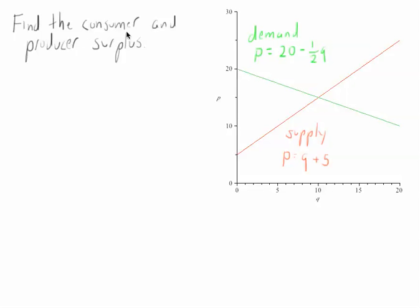Hey business calculus students. We're going to find consumer and producer surplus given this demand line and the supply line. So just as a reminder here, this is the demand curve, so notice the higher the price, the lower the quantity that consumers will buy. But here's the supply line. Notice that the higher the price is, the more that suppliers will supply.